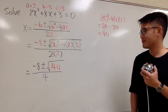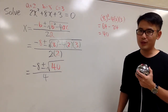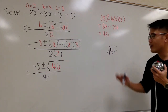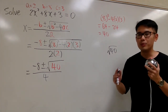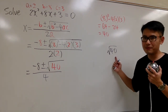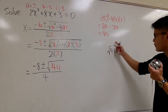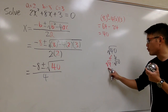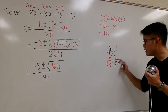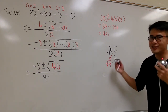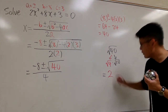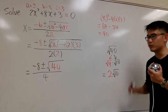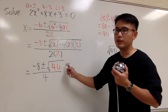And now, can we do anything more? Let's look at the square root of 40. To simplify, we ask what times what gives 40 where one number is a perfect square. We know 4 times 10 is 40, and 4 is a perfect square. So we break down square root of 40 as square root of 4 times square root of 10. Square root of 4 is just 2, and we maintain the square root of 10. So square root of 40 simplifies to 2 times square root of 10, and we replace it in our expression.